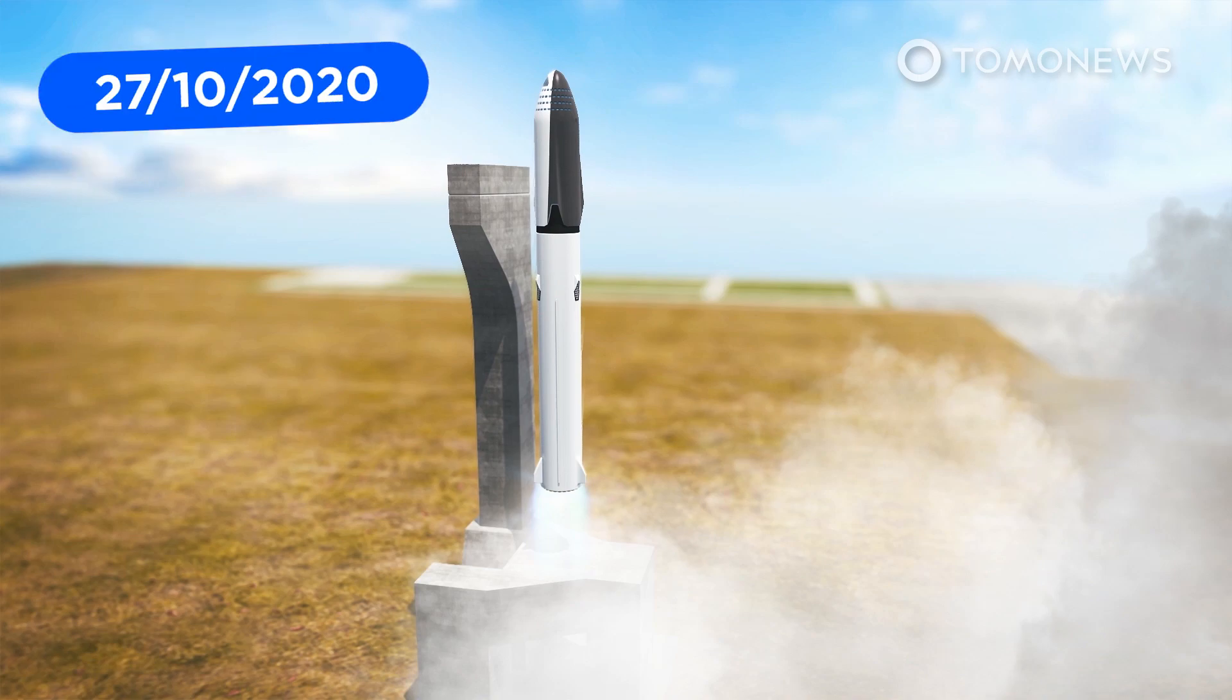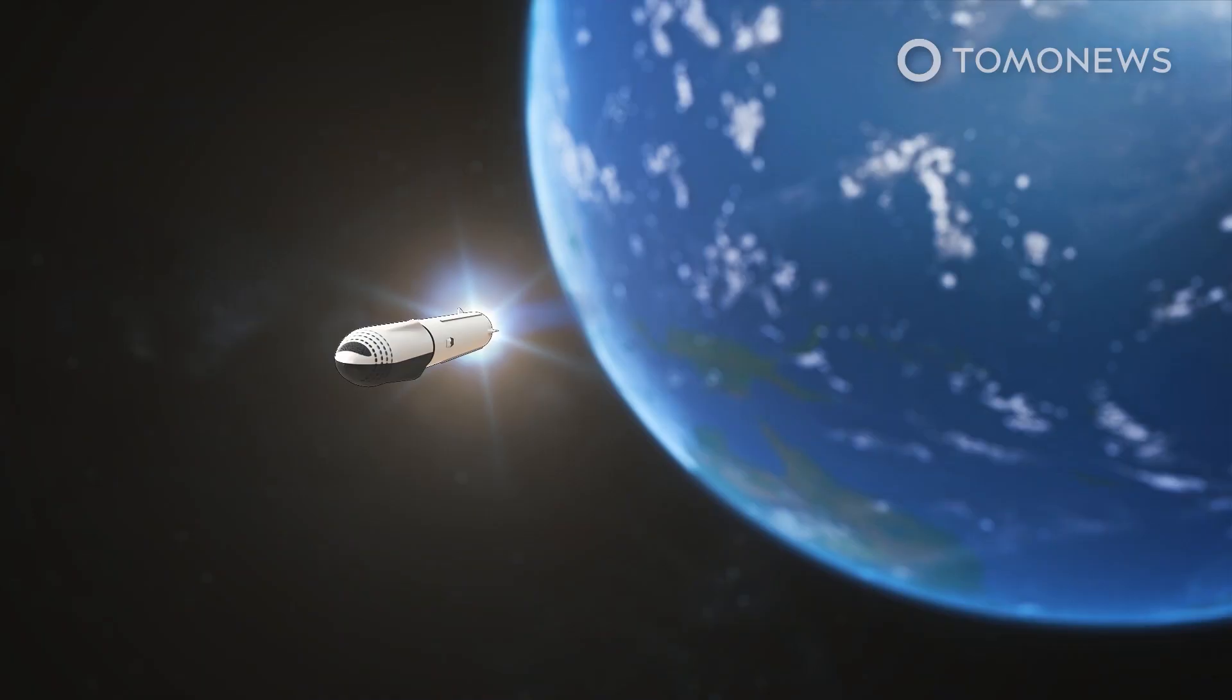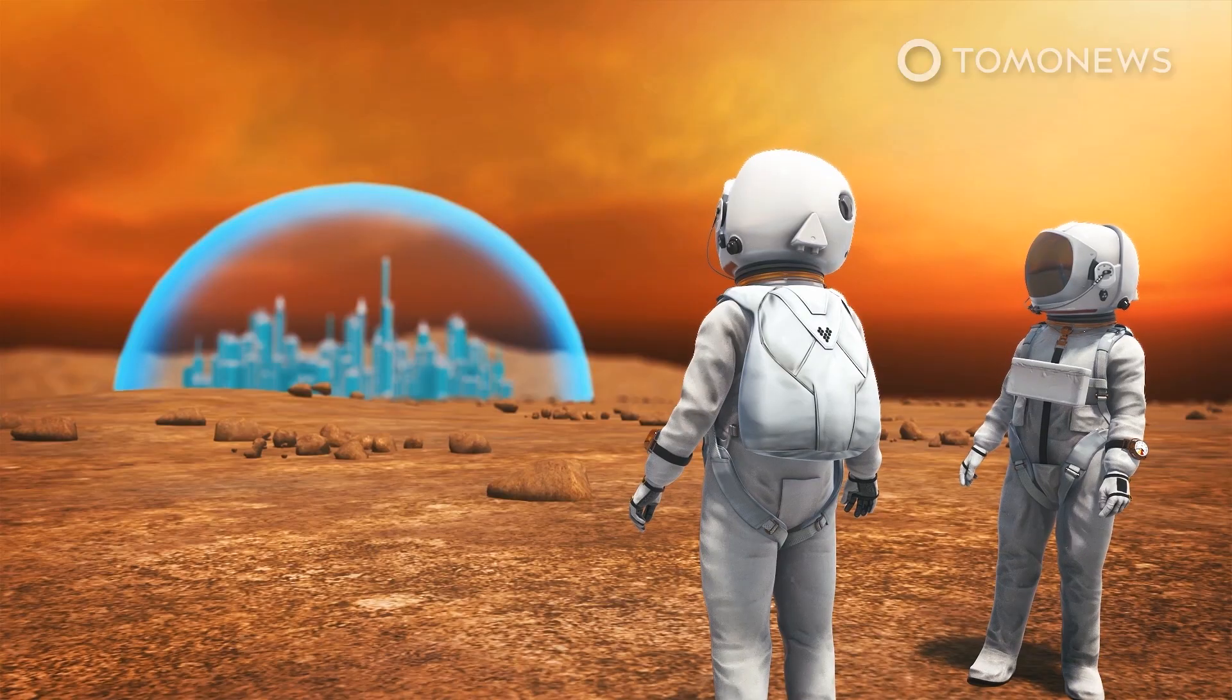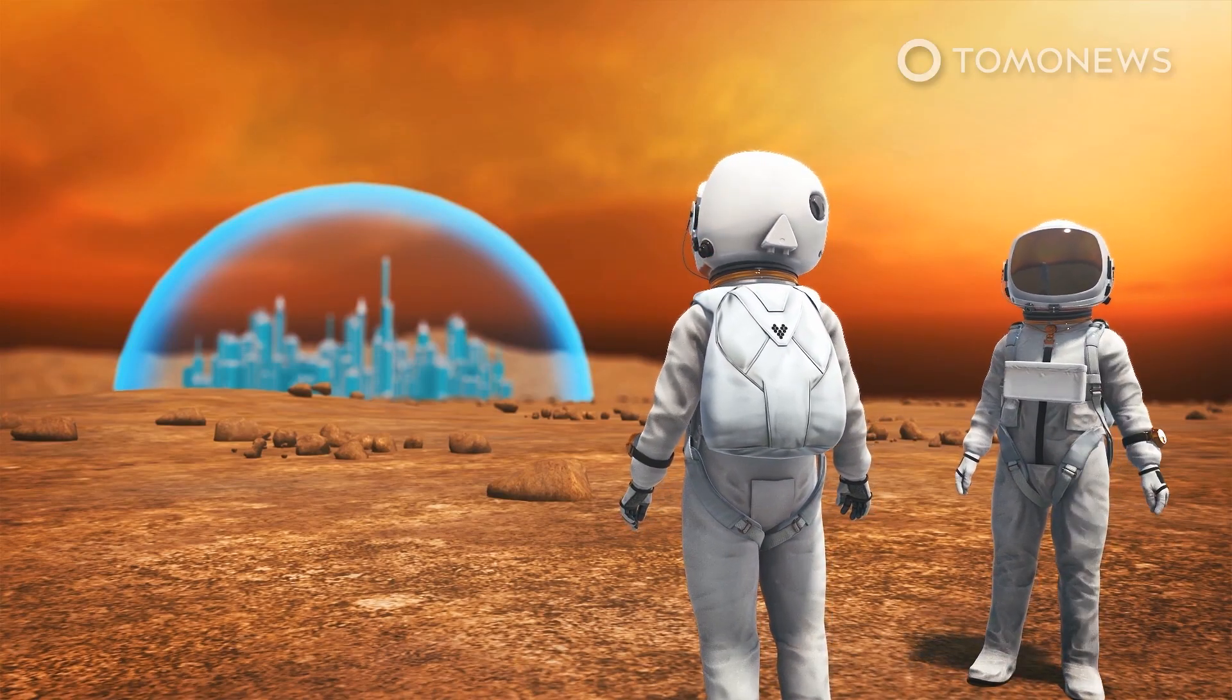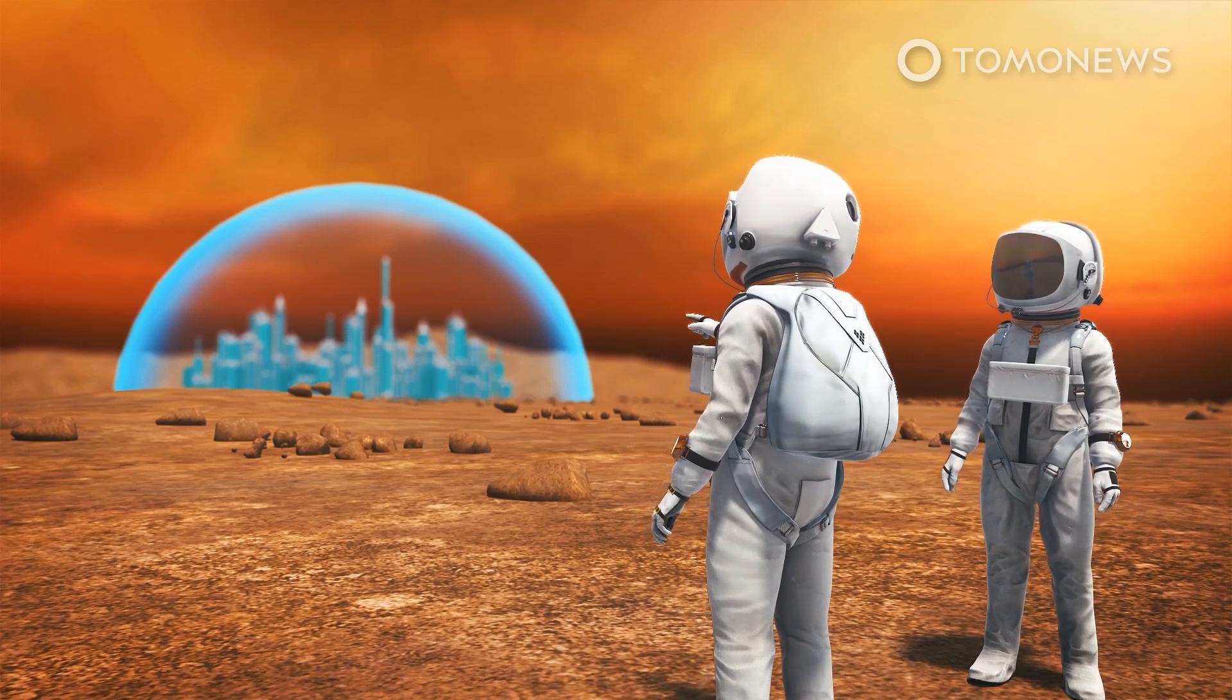Following up on his plans to transport 1 million people to Mars by 2050, Elon Musk's company, SpaceX, has now declared that it will also send hundreds of satellites to Mars to provide the colonists with space internet.